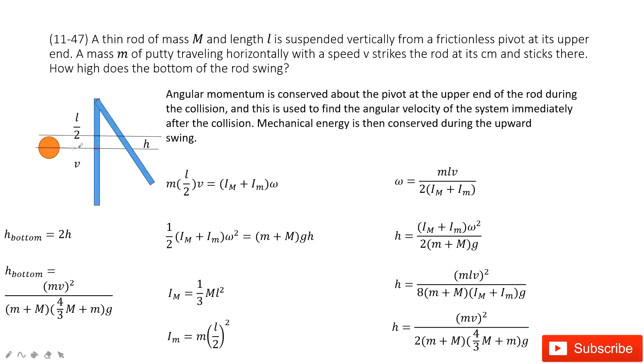After this small object hits and sticks together with the rod, the rod will swing up and reach this position. We need to find how high the bottom of this rod swings, the distance from there to there, the bottom edge.